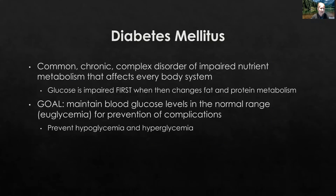When we think about diabetes mellitus, this is a common, chronic, and very complex disorder. What's happening is we have impaired nutrient metabolism, and that impairment affects every body system. Glucose is going to be the first nutrient that's impaired, but because of that glucose impairment, we are very quickly going to see changes in the way that fat and protein are metabolized throughout the body.